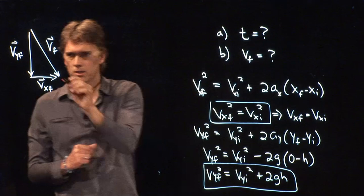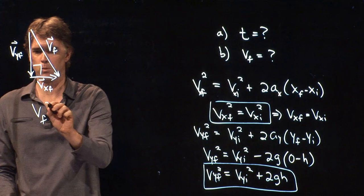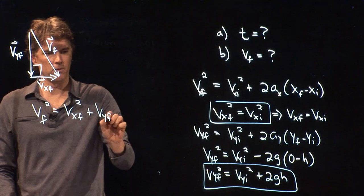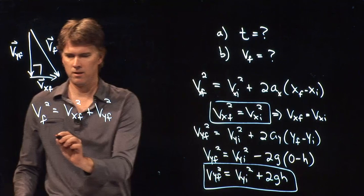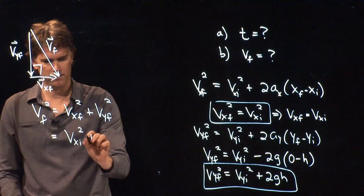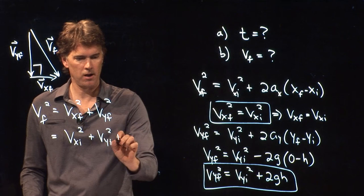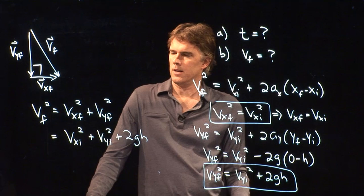And now look, this is another right triangle. And so we can say vf squared equals vxf squared plus vyf squared. And now we know all that stuff. Vxf squared is just vxi squared. Vyf squared is vyi squared plus 2gh.